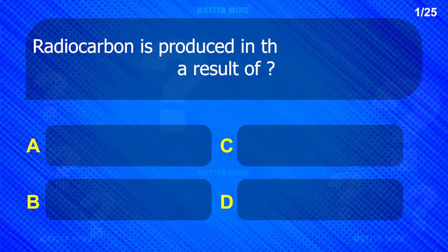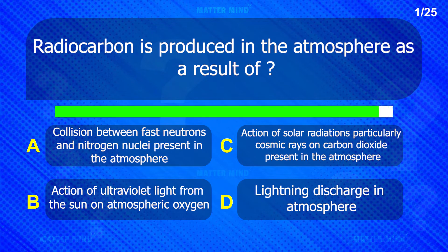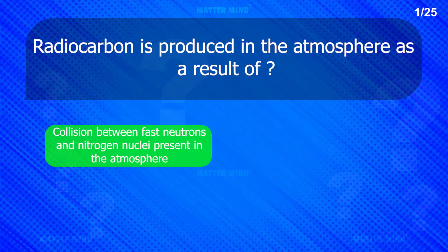Radiocarbon is produced in the atmosphere as a result of collision between fast neutrons and nitrogen nuclei present in the atmosphere.